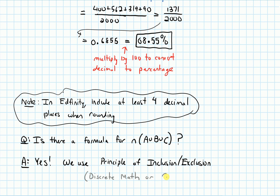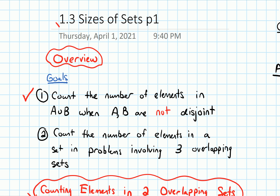The principle of inclusion-exclusion is something you might see in a discrete math or combinatorics course — combinatorics deals with the math of counting different objects. It's beyond the scope of our class, so we won't cover it here. The way we handle three overlapping sets in this course is with Venn diagrams, and we've now finished our last goal: counting elements when we have three overlapping sets.